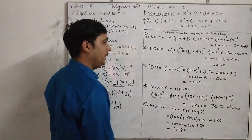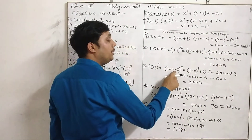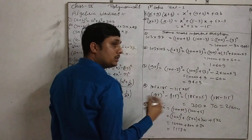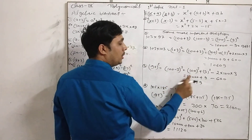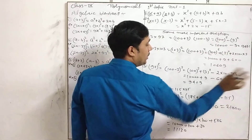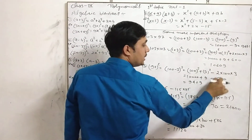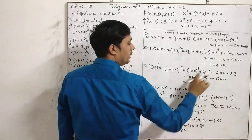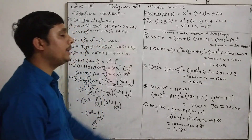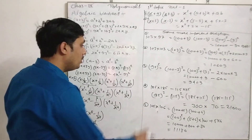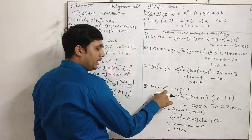For 97 squared, write it as (100 − 3)². Using (a − b)² = a² + b² − 2ab: 10,000 + 9 − 600 = 9,409. Now for 185² − 115²: using a² − b² = (a + b)(a − b), which gives (185 + 115)(185 − 115) = 300 × 70 = 21,000.